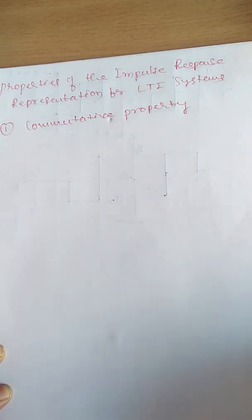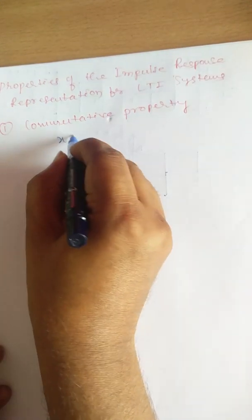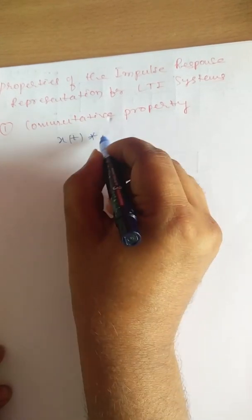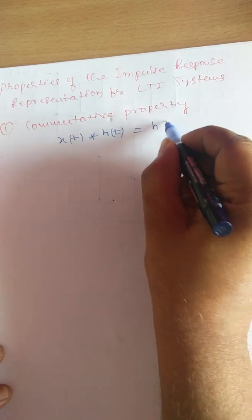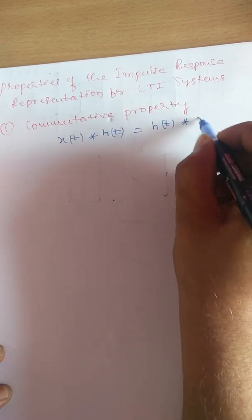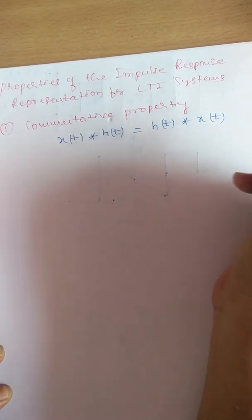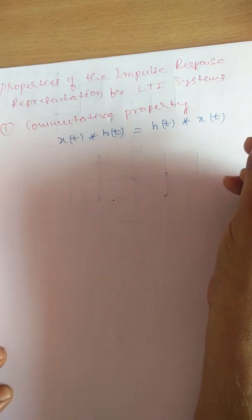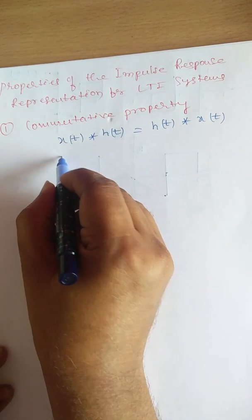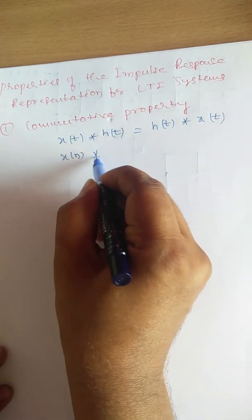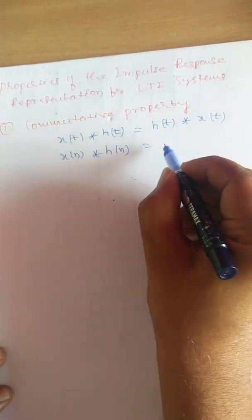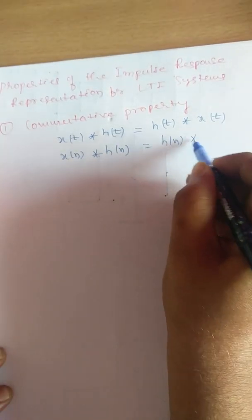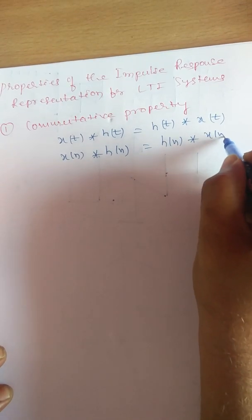The first property is the commutative property. It states that when x(t) is linearly convolved with h(t), that is the same as h(t) linearly convolved with x(t) — that is, a into b is the same as b into a. Similarly, in the case of a discrete time signal, x(n) linearly convolved with h(n) is the same as h(n) linearly convolved with x(n).